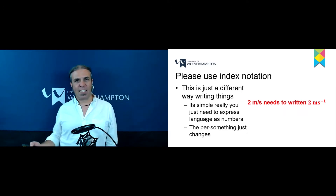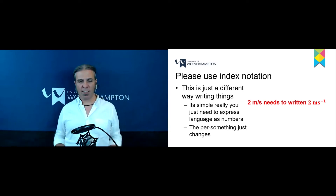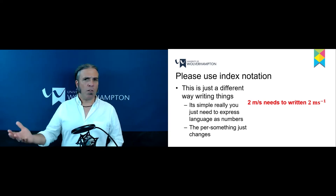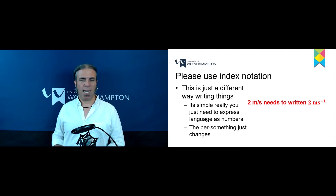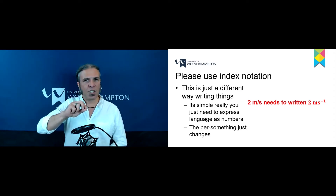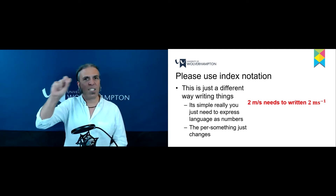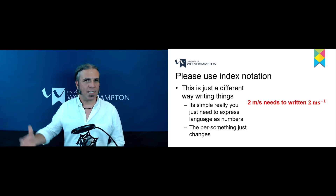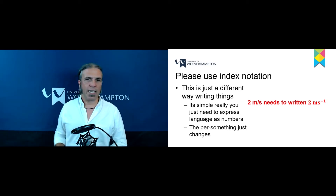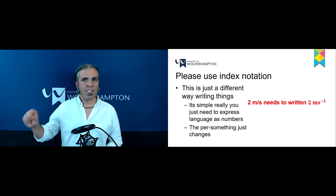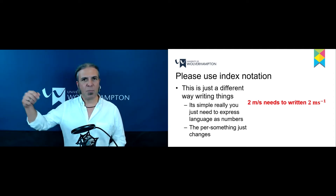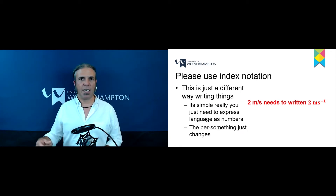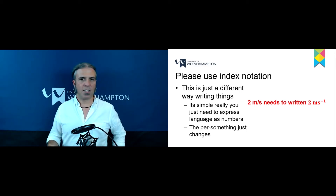So let's look at index notation — it is very easy, it's just a different way of writing things. Before, you might have written something like two meters per second as 'm/s', but actually we don't express units like that at more advanced levels. Instead, we'd write it as two ms⁻¹. That minus one just means 'per something' — that's all. You can express a whole variety of different units, particularly for speed and distance, in this way.